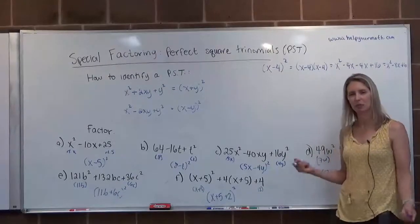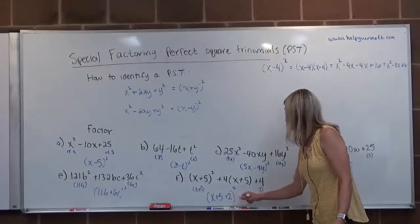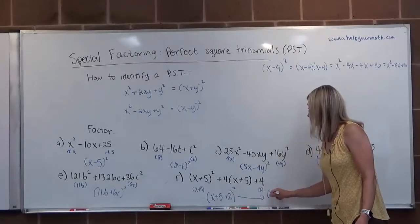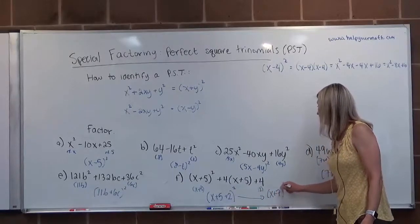We probably now want to clean this up a little bit. We don't really want to leave it as X plus 5 plus 2, because we can add 5 and 2. So I'm just going to rewrite it as X plus 7 quantity squared.